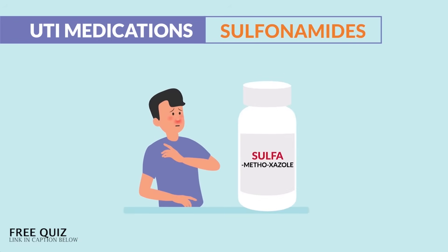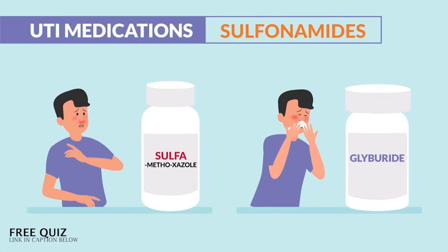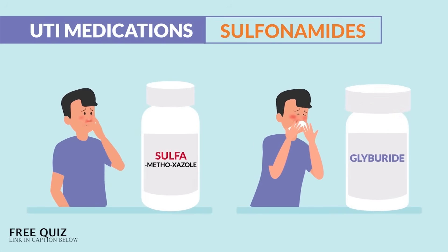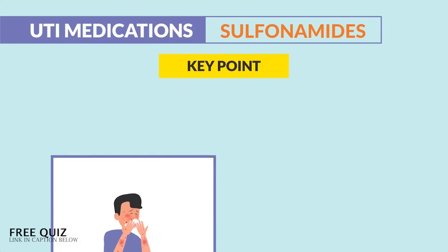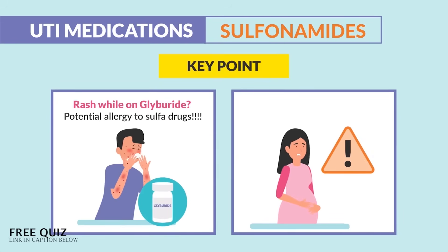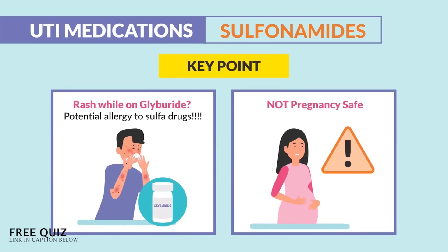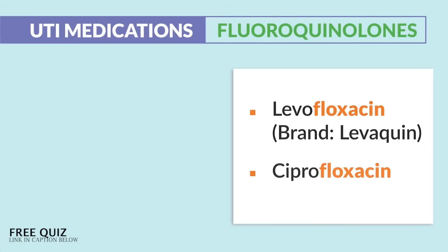Contraindications include hypersensitivity to sulfa drugs. Always assess for allergies to sulfonylureas like glyburide, the oral anti-diabetic drug — this was a big question on the HESI exit exam. Key points: if a patient has a rash on glyburide, that's a potential allergy to sulfa drugs, and Bactrim is not pregnancy safe.